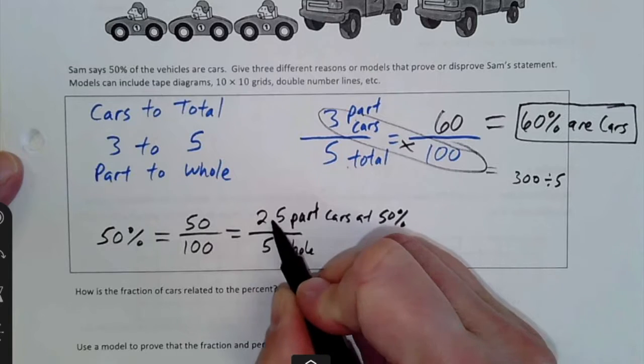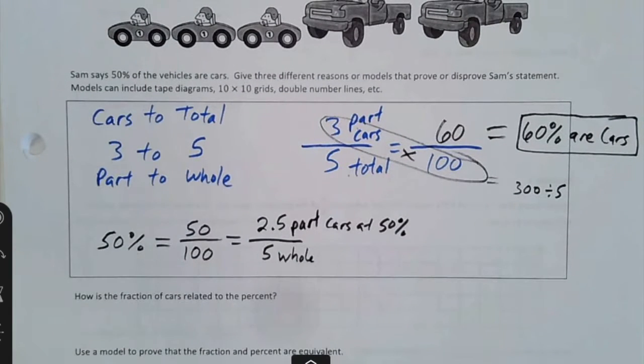If we wanted the part to be cars at 50%, then how many actual cars would have to be up there? Well, if there's five total, and we know 50 is half of 100, what's half of five? That's 2.5. And there's more than 2.5. We actually have three cars there. So that kind of disproves it as well.